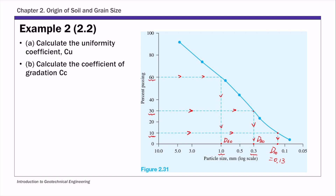Once you have these d values, to calculate the two coefficients you just use their definitions. Part a is the coefficient of uniformity, C sub u. By definition, that is d60 over d10. So that's 1 over 0.13, and that's about 7.69.